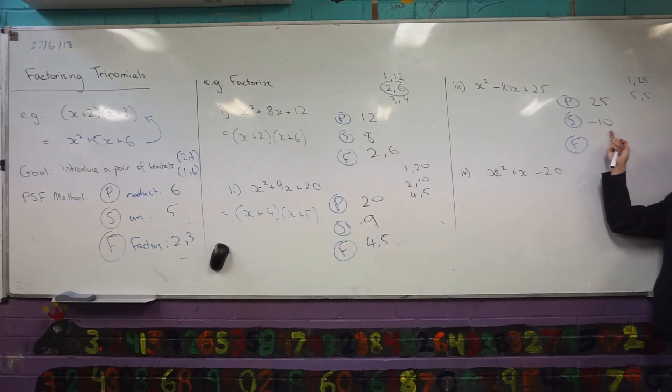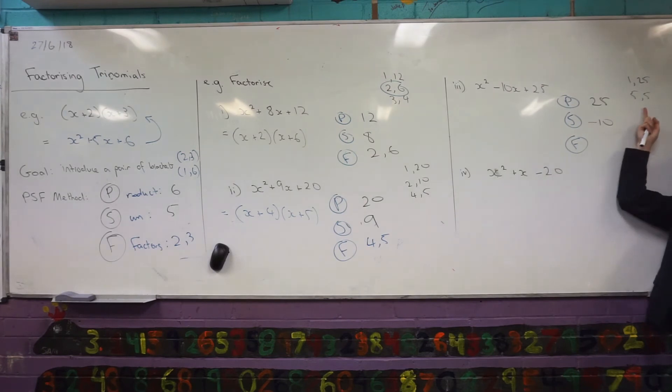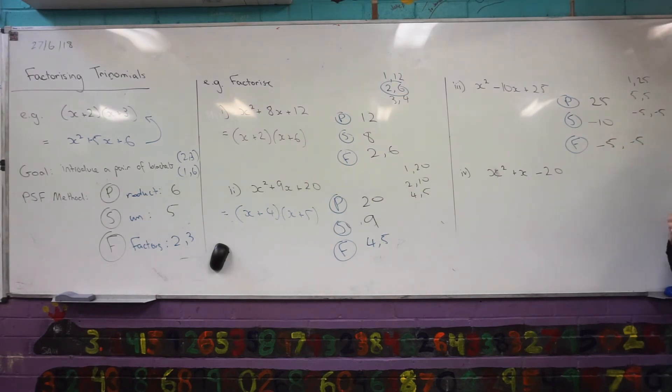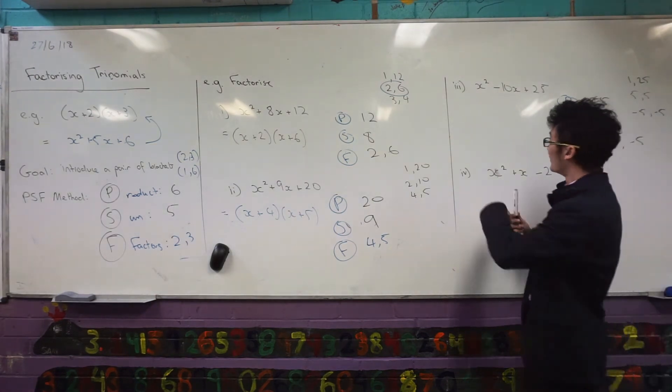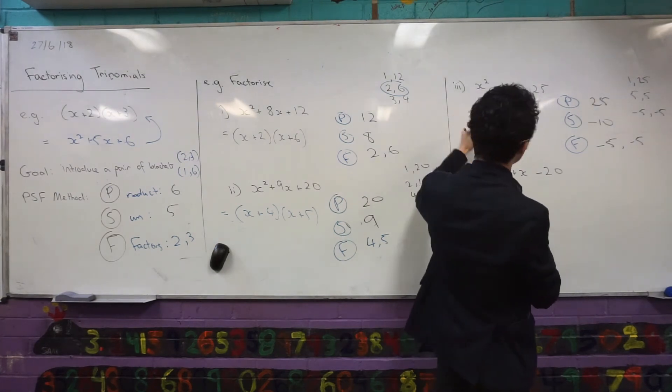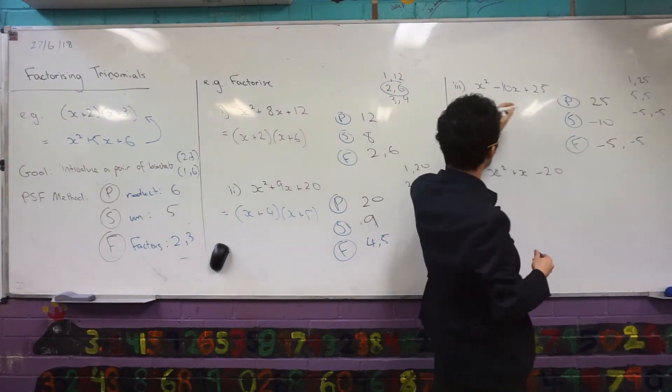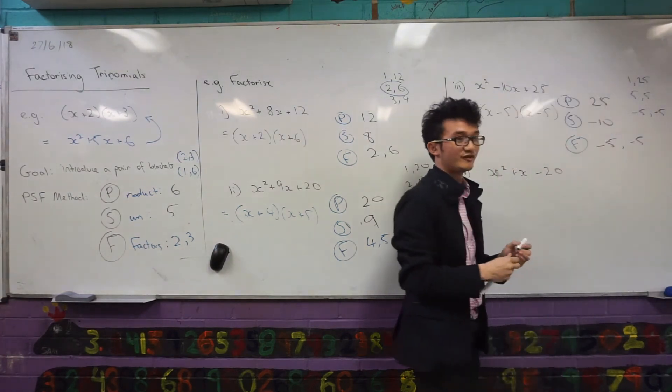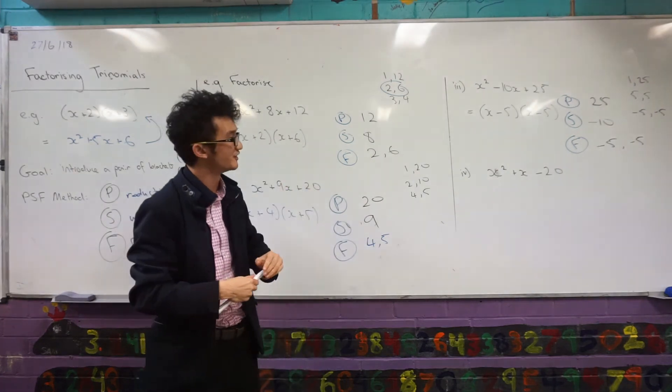So if I want them to sum to a negative number, I obviously have to introduce negative numbers. And so in this case, what I'm going to do is I'm going to say, actually, if I want them to add to minus 10, what if I make both of these negative? Because if I make them both negative, they will still multiply to positive 25 because a negative times a negative is a positive number. So my factors are both going to be negative 5 and negative 5. So I go back and I'm always thinking about introducing those pairs of brackets. So in this case, my factors are going to be x minus 5 and x minus 5. So you can see how we can introduce negative numbers into these factors here.